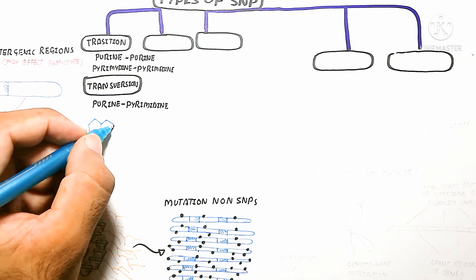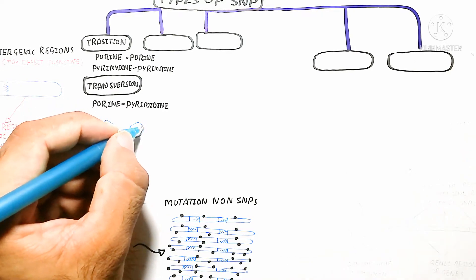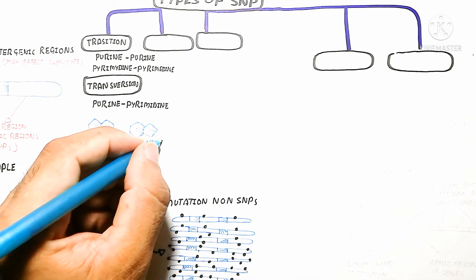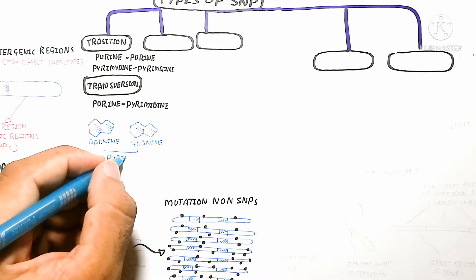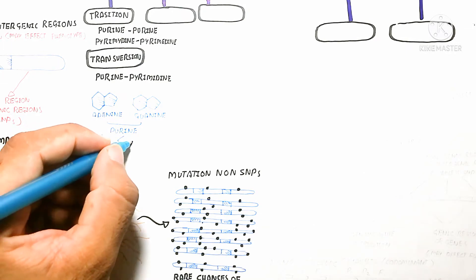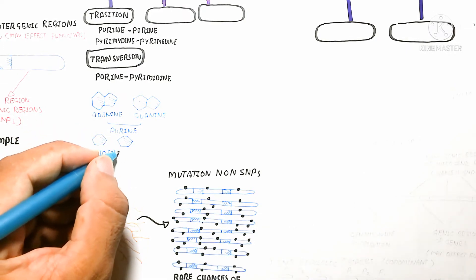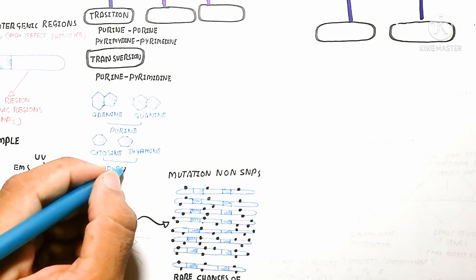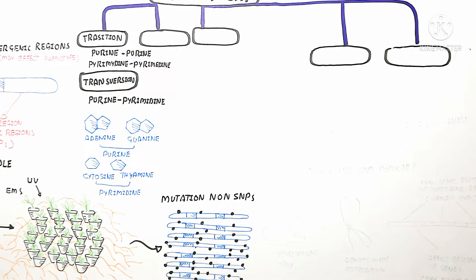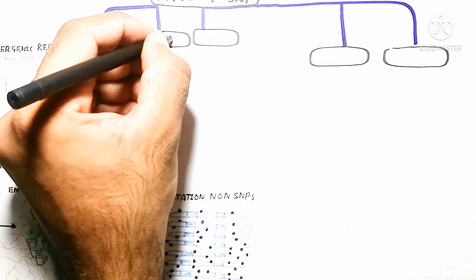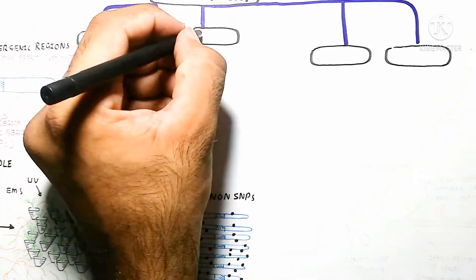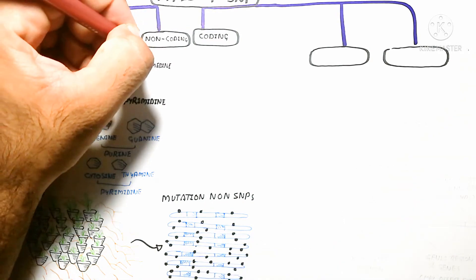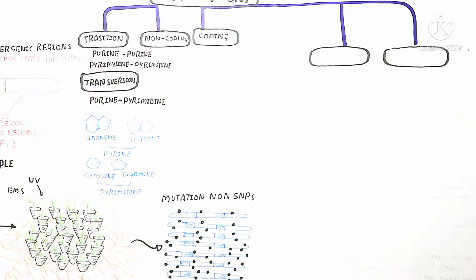Transversion is the change from purine to pyrimidine — meaning both single-ring and double-ring nucleotides are involved. For example, adenine can be changed, as well as thymine or cytosine. To summarize: purine to purine change is transition, and purine to pyrimidine change is transversion.